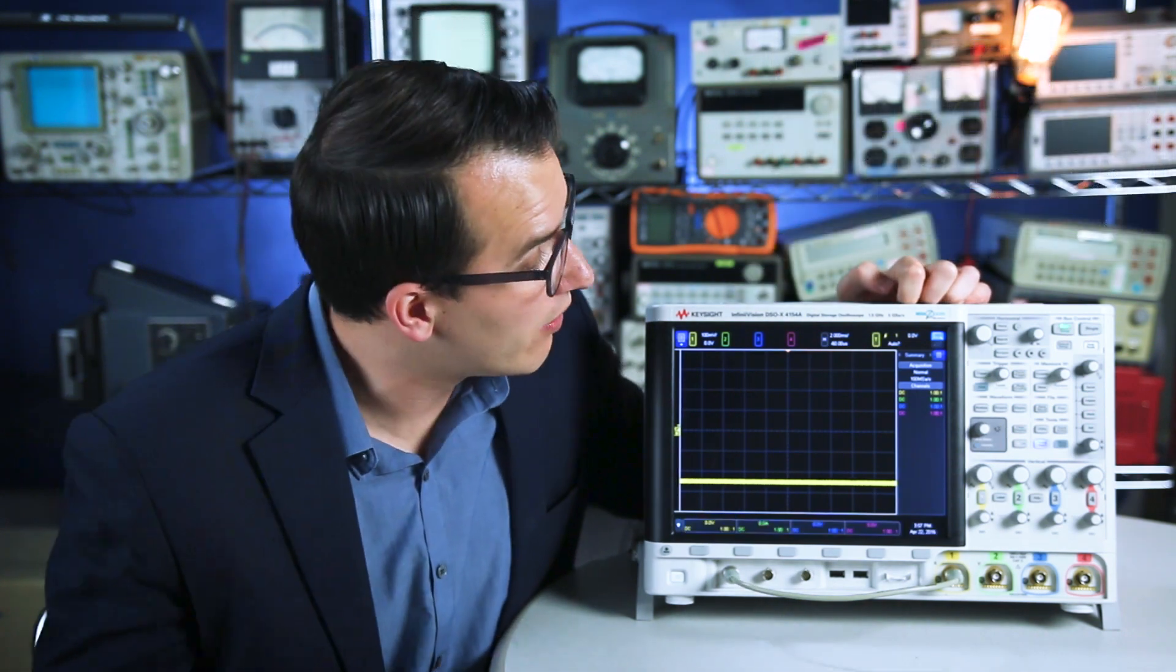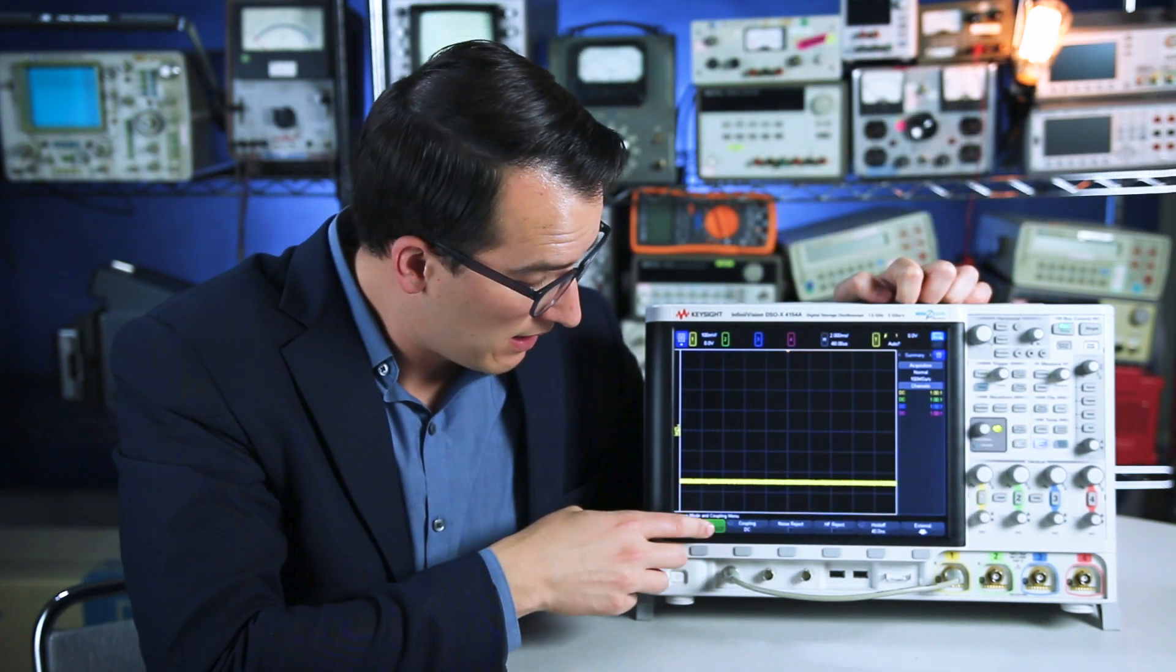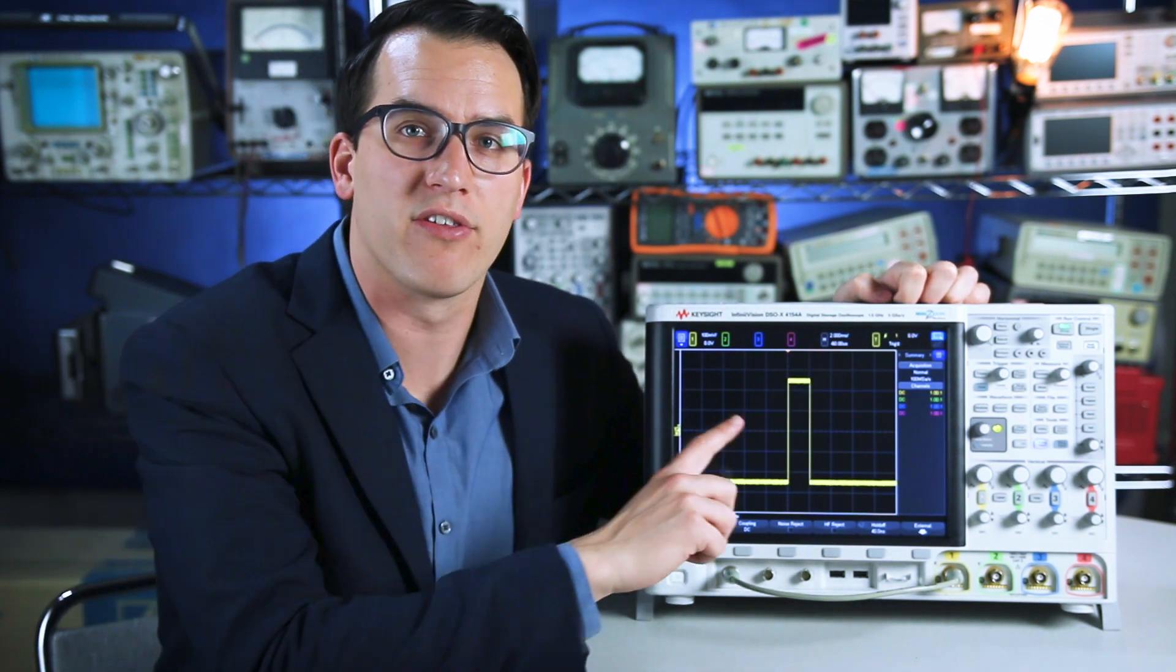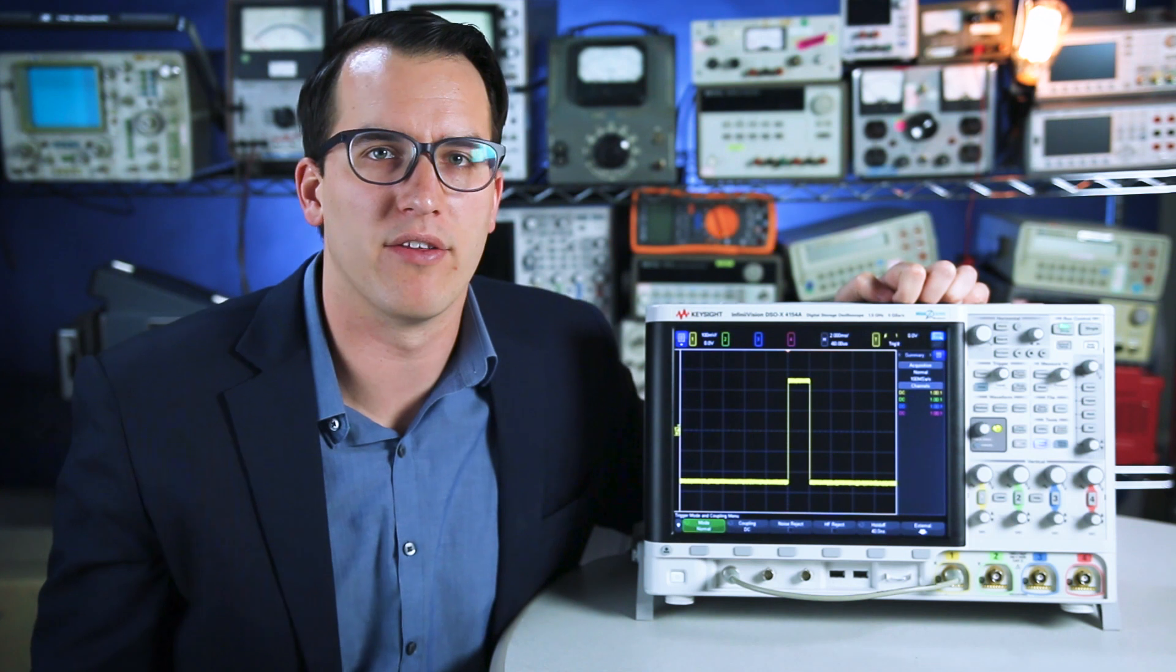So to set your scope to normal acquisition mode, hit the mode coupling button and then set your mode to normal. Once your scope is set to normal, you'll see the signal dead center on the screen.